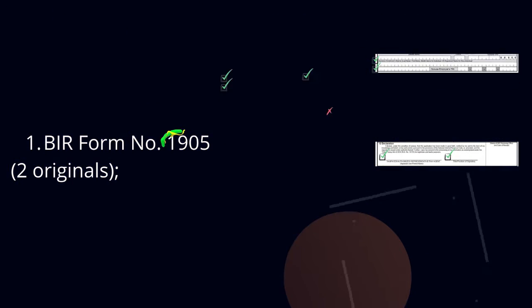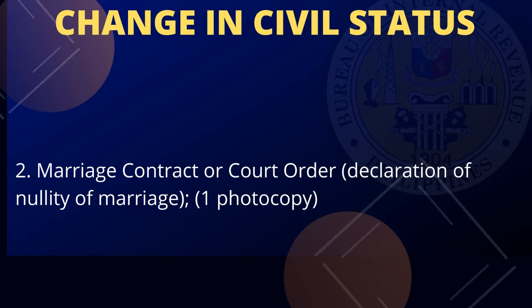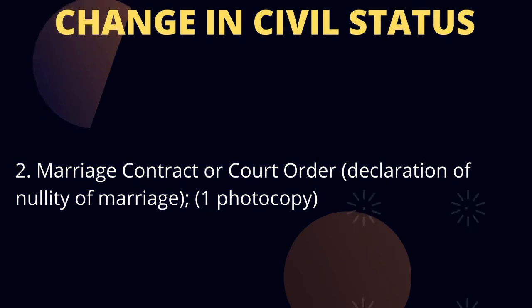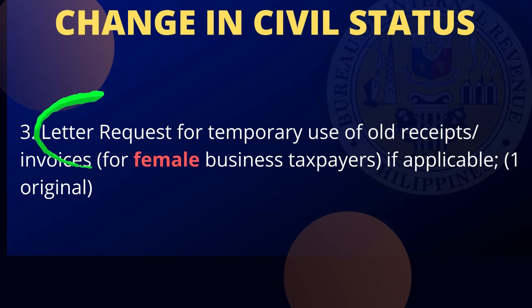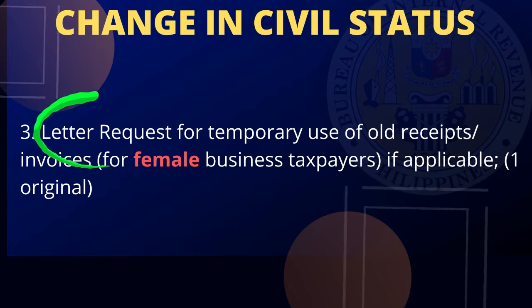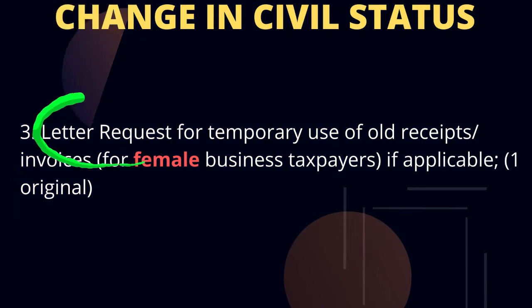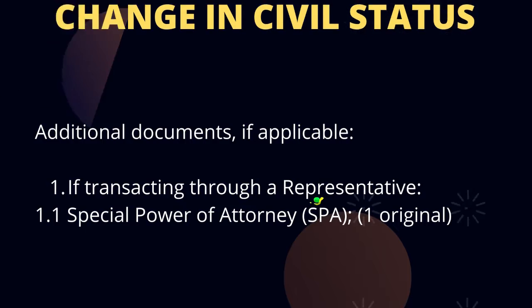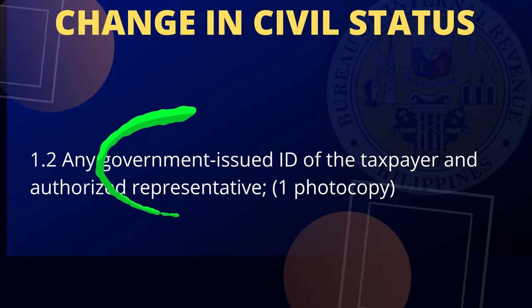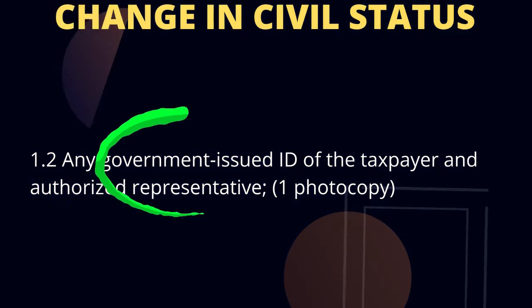Title or position of signatory. Two, marriage contract or court order — declaration of nullity of marriage, one photocopy. Three, letter request for temporary use of all receipts or invoices for female business taxpayers, if applicable, one original. Additional documents if applicable: special power of attorney, one original; any government-issued ID of the taxpayer and authorized representative, one photocopy.